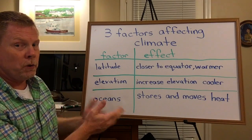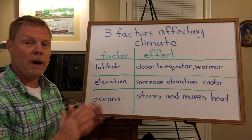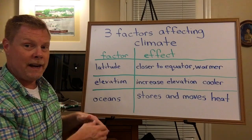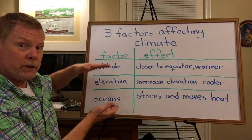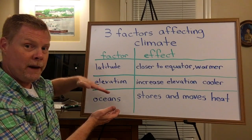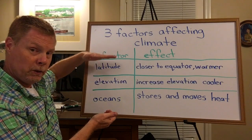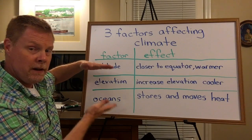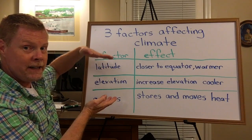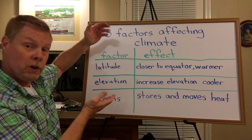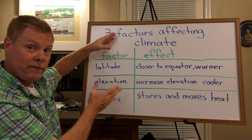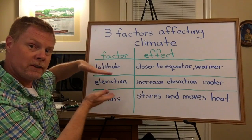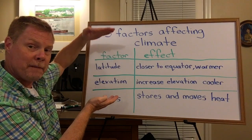Of course, it's possible that an area close to the equator — low latitude — but high in elevation could in fact be very cold, because it's high up in the atmosphere.